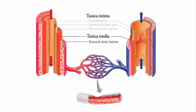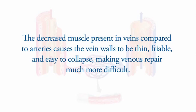You will appreciate this difference when you perform the venous anastomosis, as the decreased muscle present in veins compared to arteries causes the vein walls to be thin, friable, and easy to collapse, making venous repair much more difficult.